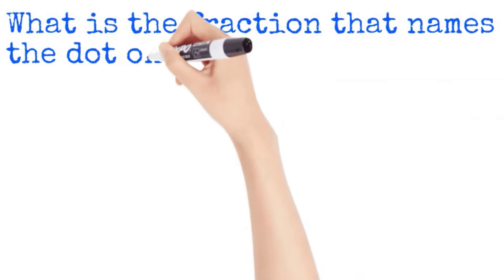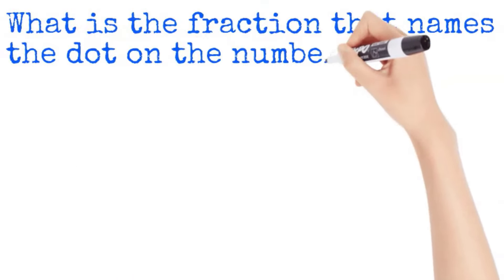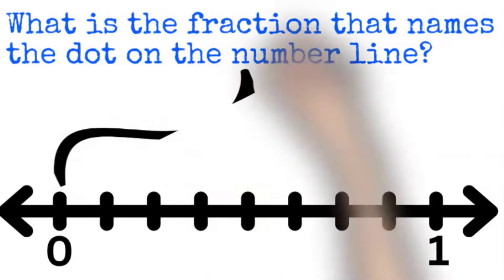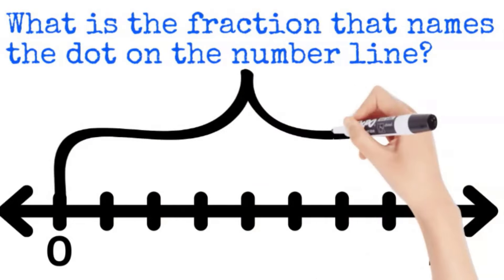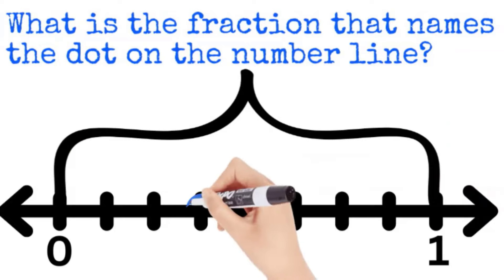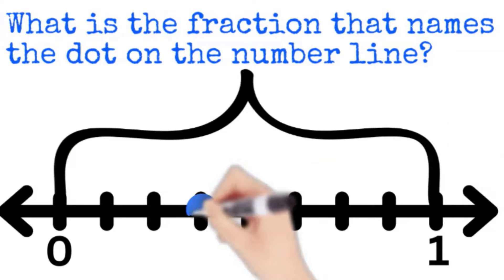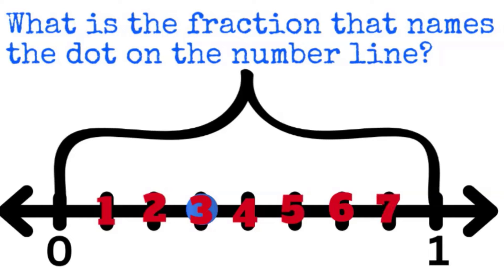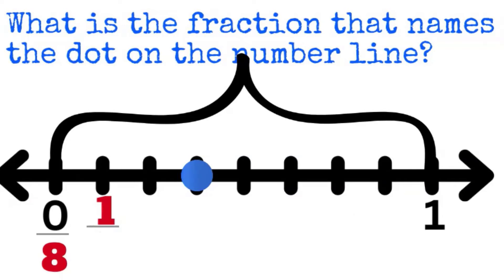What is the fraction that names the dot on this number line? Remember, from zero to one is my whole, and here's your dot. Let's count the pieces that the whole is broken into: four, five, six, seven, eight equal parts. So eight is my denominator.